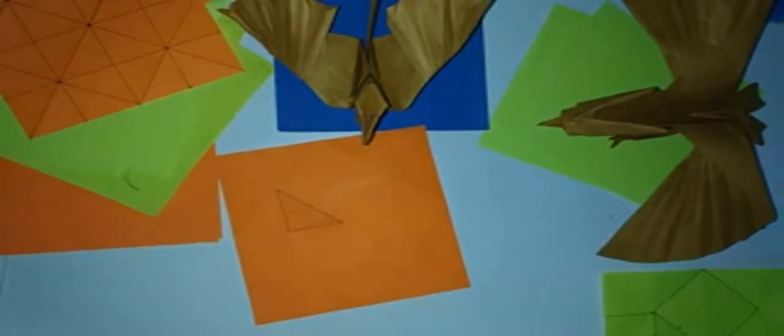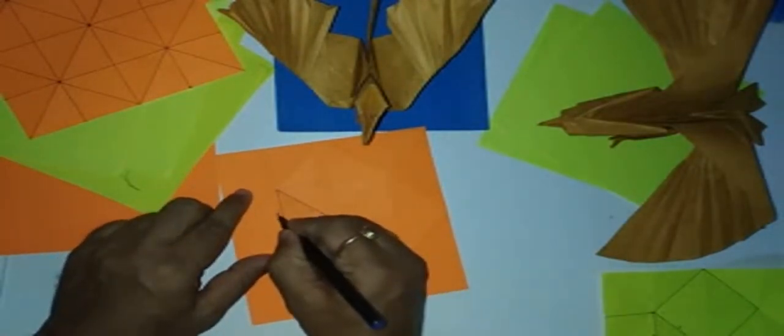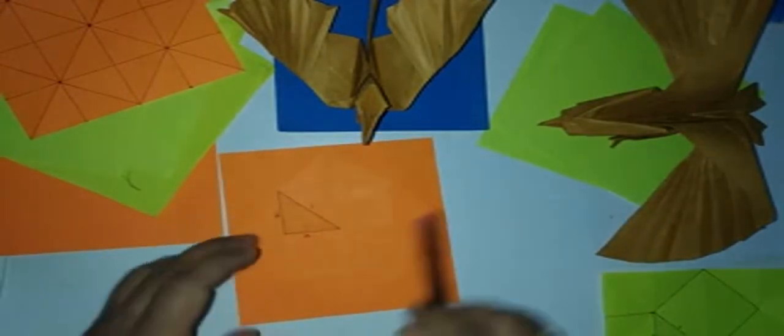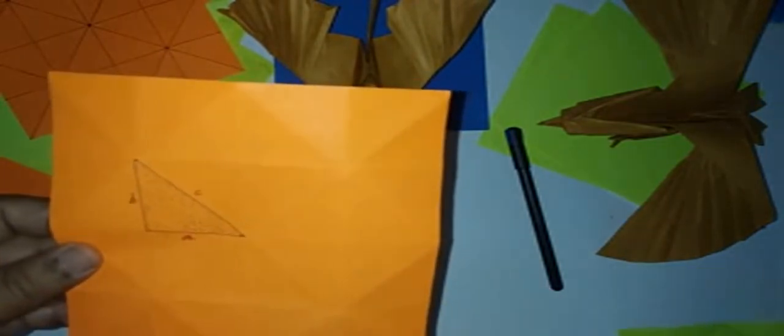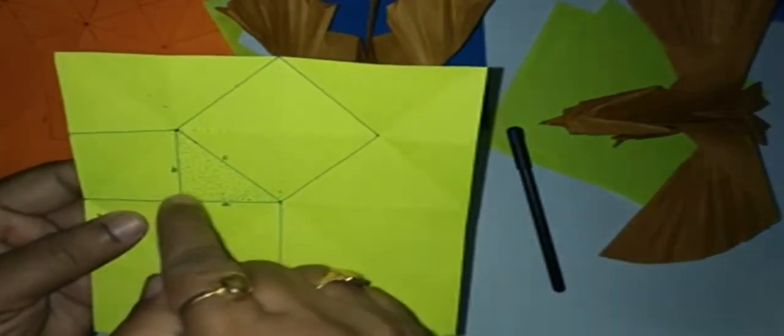Let us call these sides as A, B, and C. Let us see. These are the squares formed.